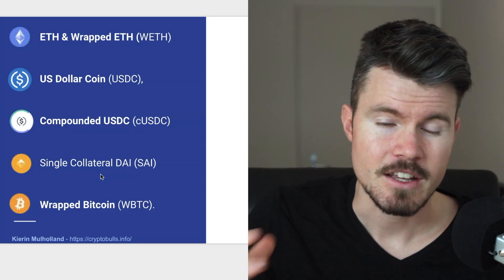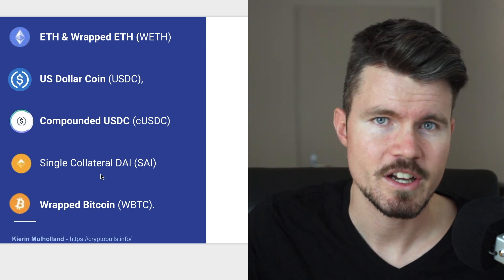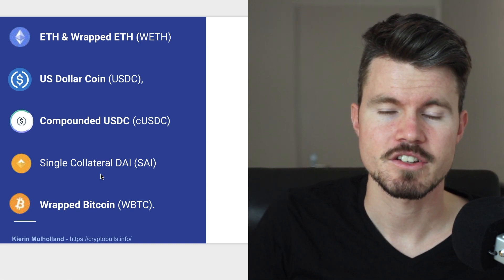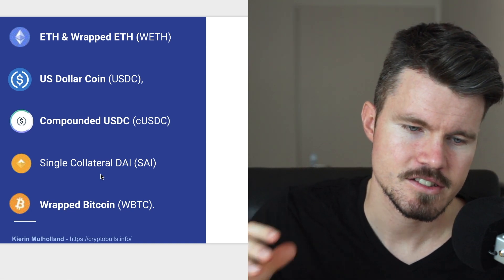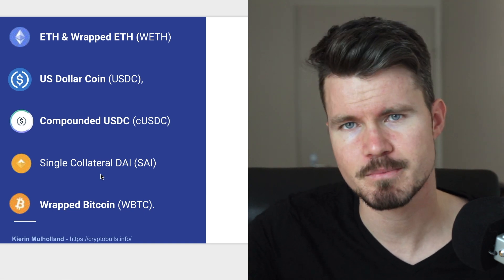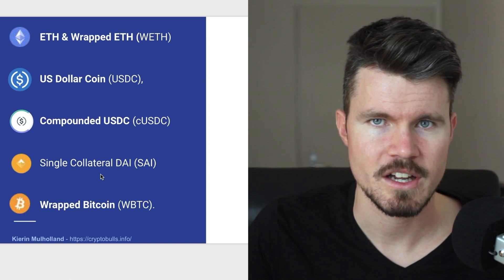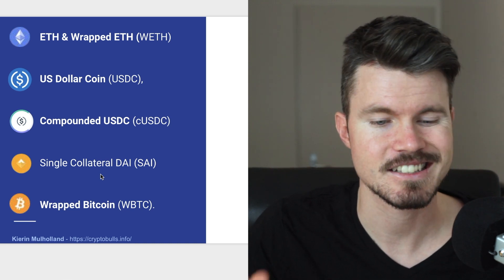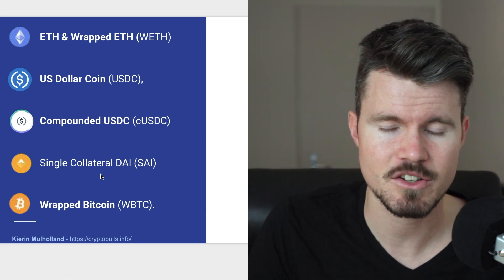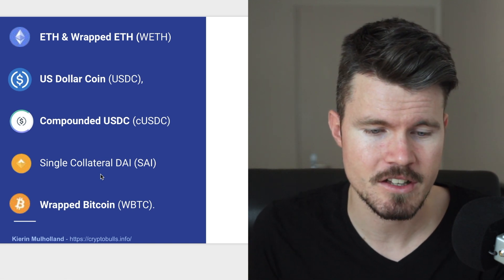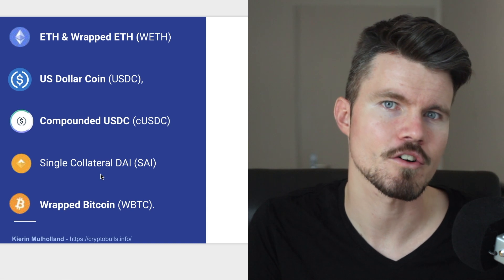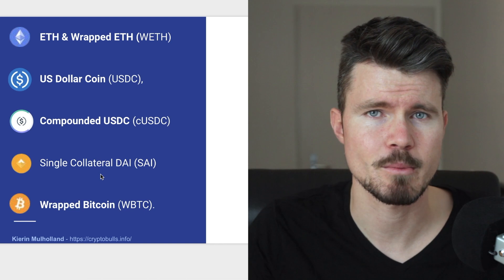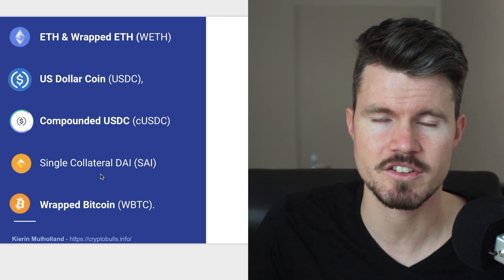The cryptocurrencies used are Ethereum, then wrapped Ethereum which is an ERC20 token backed one-to-one by Ethereum, then USDC which is a stablecoin, then compounded USDC which is basically USDC but you earn interest when you hold that stablecoin, then single collateral DAI and SAI, and finally wrapped Bitcoin which is an ERC20 token backed one-to-one by Bitcoin. An interesting aspect is you get the advantages of an ERC20 token usable on the Ethereum blockchain, but it's backed one-to-one by Bitcoin so it carries the store of value of Bitcoin.